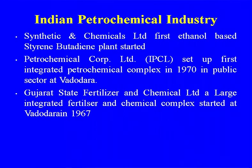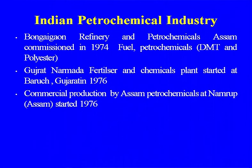Synthetics and Chemicals at Bareilly was the first non-petroleum, ethanol-based styrene-butadiene rubber petrochemical complex, the first integrated complex set up in 1977 in the public sector. It is now part of IPCL, which Reliance has taken over — about 17 plants there. Gujarat State Fertilizer Corporation (GSFC) was located next to IPCL and Indian Oil Corporation, receiving basic raw materials from the refinery. The Bongaigaon Refinery and Petrochemicals, making DMT and polyester materials, was commissioned in 1974.